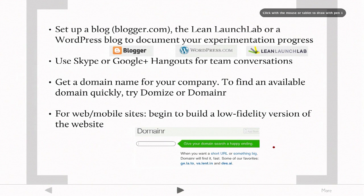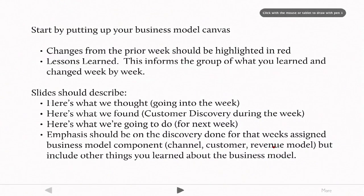Next, you want to try and see if the domain that you're interested in using for your company is available. You can use products like Domainer or Domize. For web or mobile ideas, I want you to try and build a low-fidelity version of the website. There are so many tools available — even if you are not a coder or don't have a coder on your team, you can still use sites like Google Sites or other options to create at least a splash page and the front-end user interface.